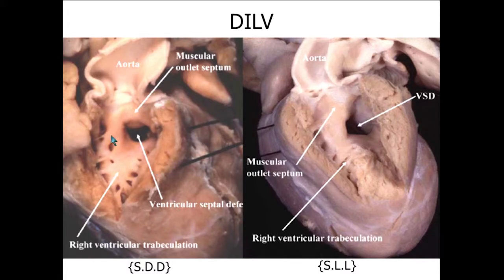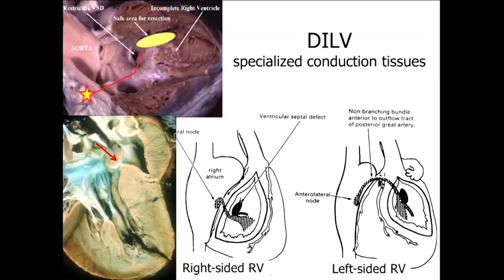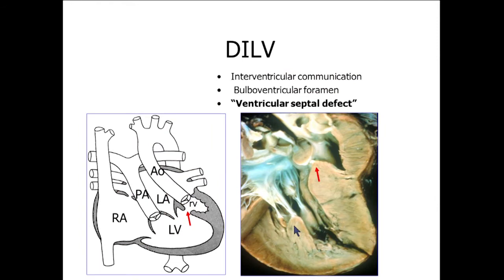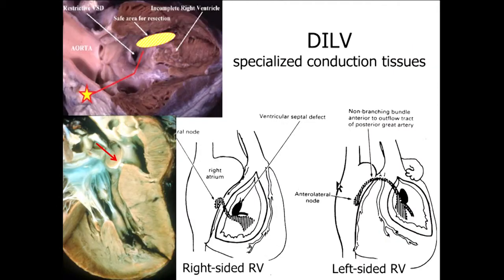Sometimes the ventricular septal defect is very small and causes outflow tract obstruction. We may need to extend or resect the VSD to relieve it. In that case, we must identify the course of the specialized conduction tissue, which differs between R-loop and L-loop ventricles. In the most common L-loop type, if the RV is left-sided as in congenitally corrected TGA, the specialized conduction tissue runs along the superior anterior aspect of the VSD.